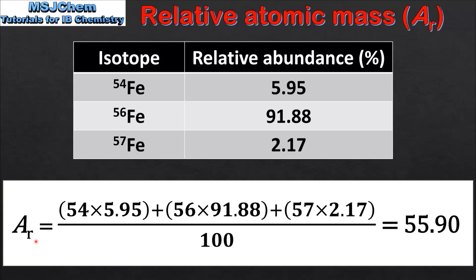So once again to calculate the relative atomic mass we multiply the mass number of each isotope by its relative abundance. We then add these together and divide by 100. So that's 54 times 5.95 plus 56 times 91.88 plus 57 times 2.17 which we then divide by 100. And this gives us a relative atomic mass of iron of 55.90.